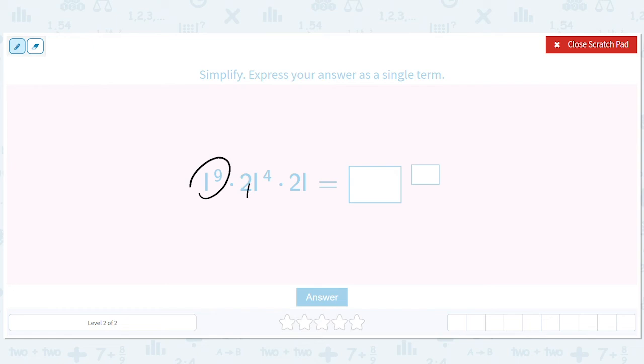So we have I to the ninth, I to the fourth and I to the first, right? There's a secret one there. So there are three. That's what's different here. And we have like another secret one in front of this. So we have one times two times two is four. And then we have I to the nine plus four plus one. So we have four I to the 14th.